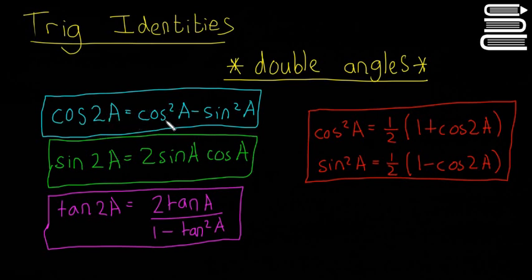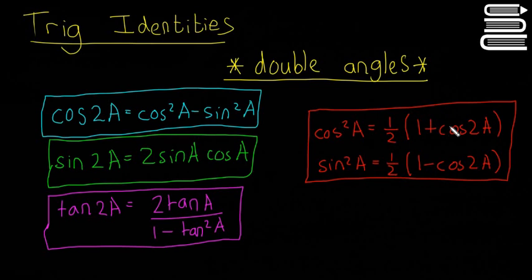We have cos 2a is equal to cos squared a minus sine squared a. Sine 2a is equal to 2 sine a cos a. And tan 2a is equal to 2 tan a over 1 minus tan squared a. These additional rearranged forms are also given in the formula book, so if you need to change something squared into just cos 2a, you can do it like that.